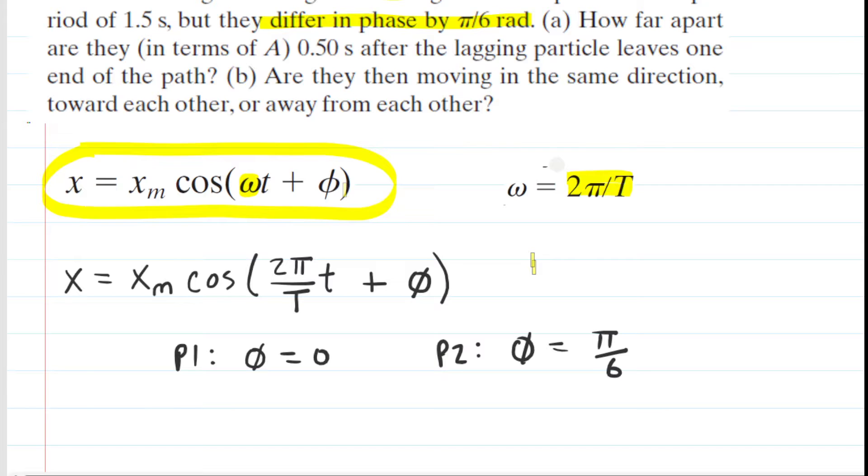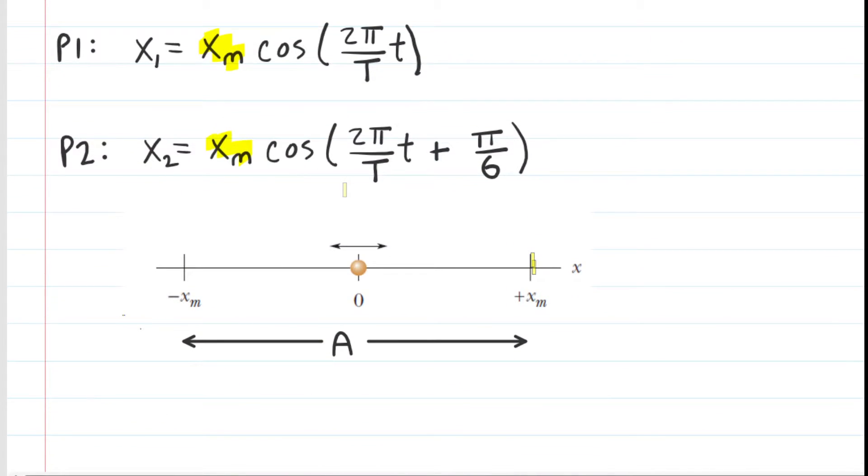You want to ask yourself, how can I represent that amplitude in terms of A? The amplitude itself would be this distance here, the distance from the equilibrium position to its maximum position. Hopefully we can see from this diagram that that is actually going to be capital A divided by 2. So the value of the amplitude, the value of x_m, will be represented as A divided by 2, and that's going to be true for both particles 1 and 2.